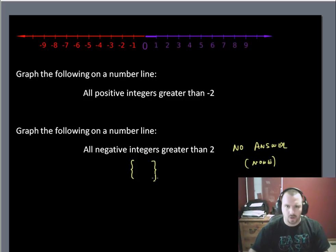There are no negative, I'm sorry, all negative integers greater than 2. There are no negative integers greater than 2. So that's the empty set. Another way of writing that, and is perhaps the more used way, is to draw a circle and put a diagonal line through it. That also stands for the empty set.